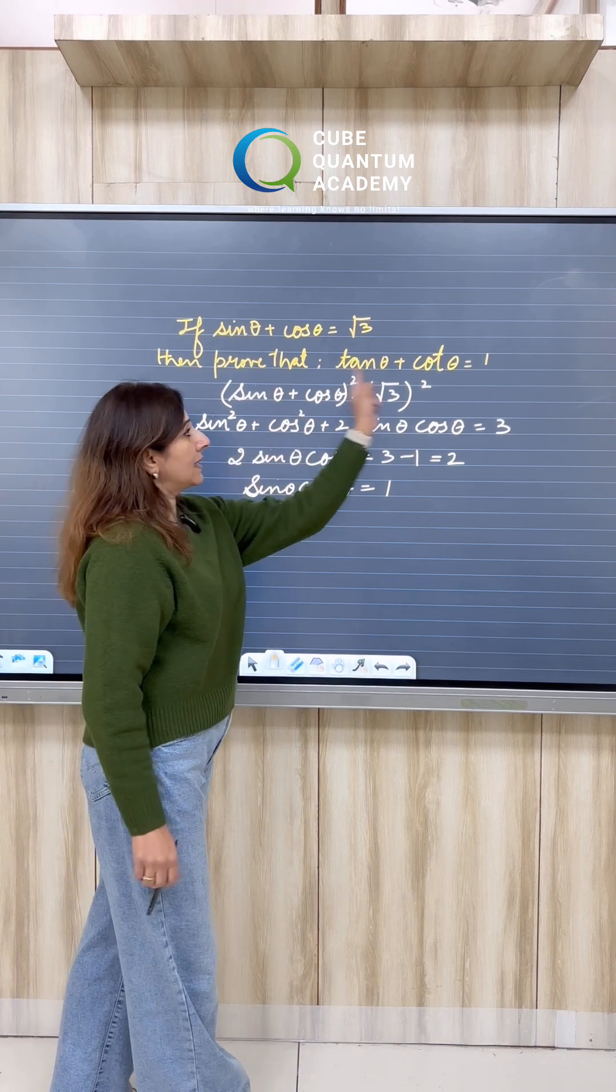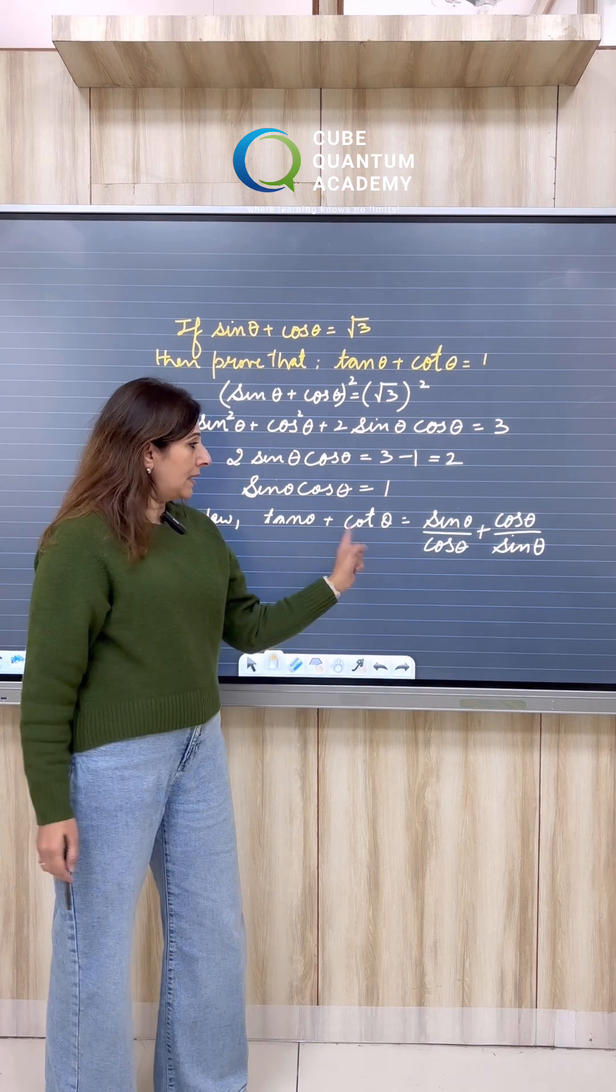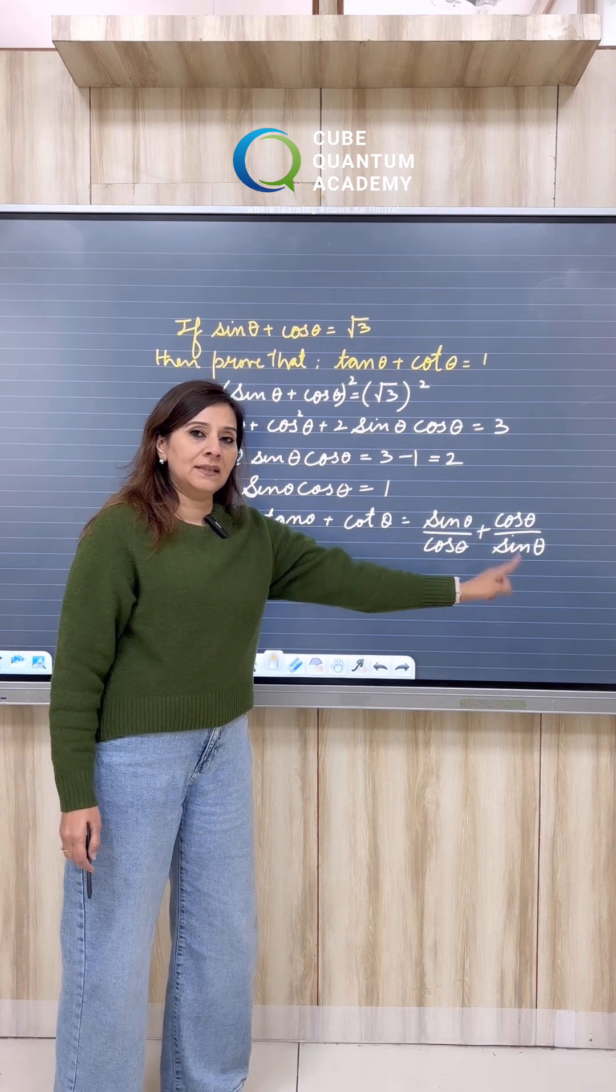Now, let us take tan theta plus cot theta. Now, we know that tan theta is equal to sin theta upon cos theta and cot theta is equal to cos theta upon sin theta.